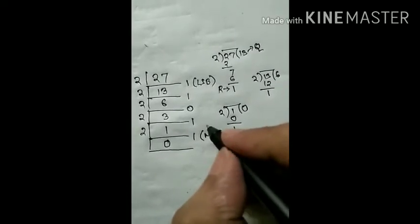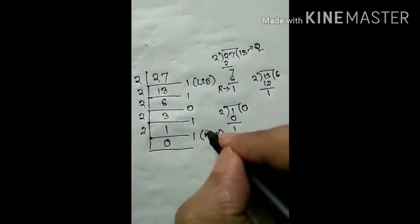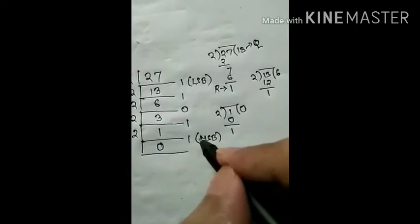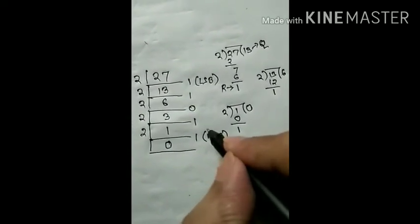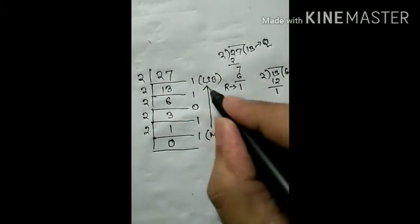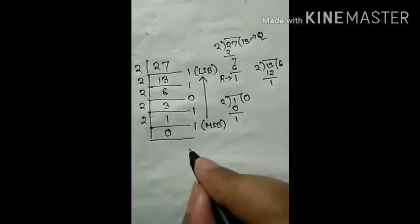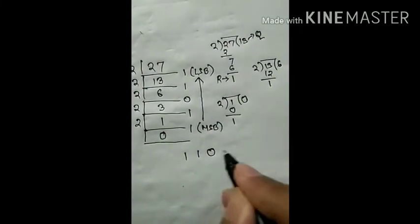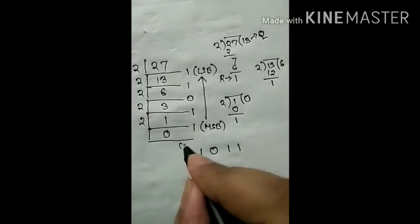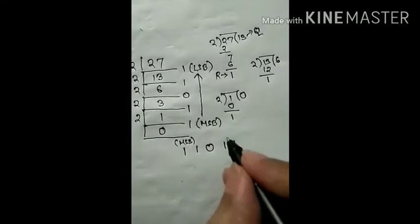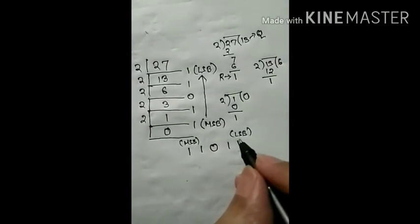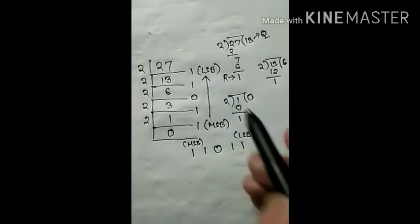Now we will count from MSB to LSB. We will count all the remainders from bottom to top to represent the number. So it becomes 1 1 0 1 1. We will read from MSB. MSB means this one, and LSB is this one, like unit space in number system. LSB is like the unit space.